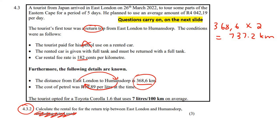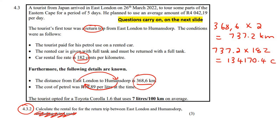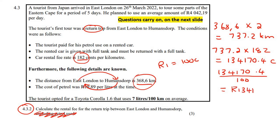For every kilometer, they are going to charge 182 cents — that's not the petrol, that's just because you're using their car, damaging their tires, using their engine. So you multiply 737.2 by 182, and that works out to 134,170.4 cents. Now let's convert that to rand: since one rand is 100 cents, we divide by 100, giving us 1341 rand and 70 cents.